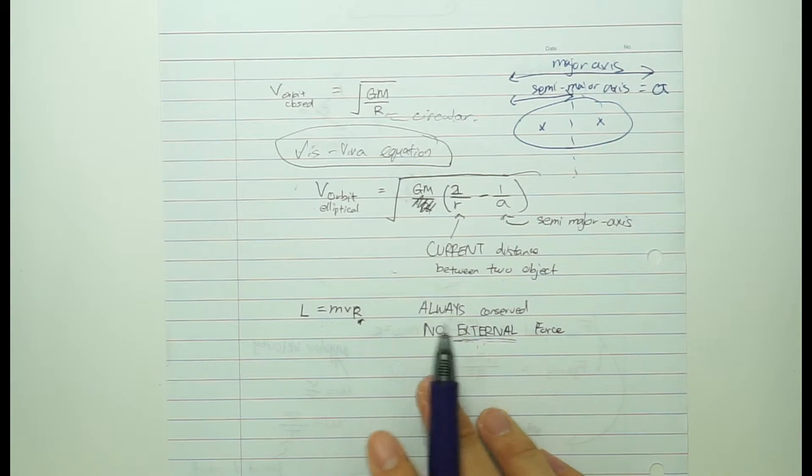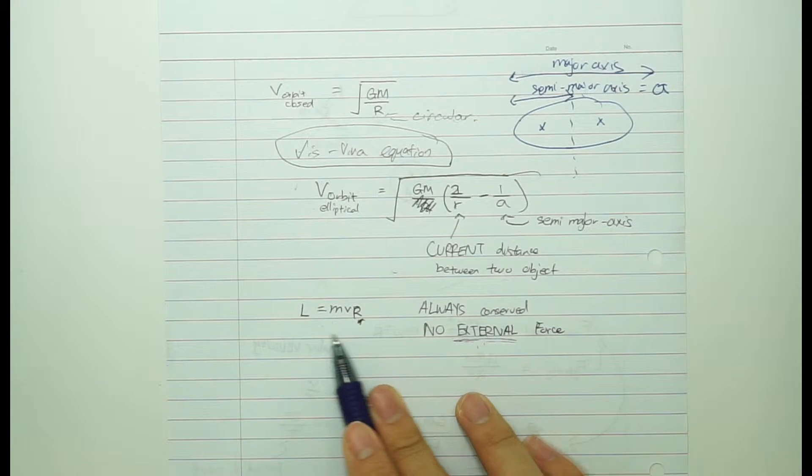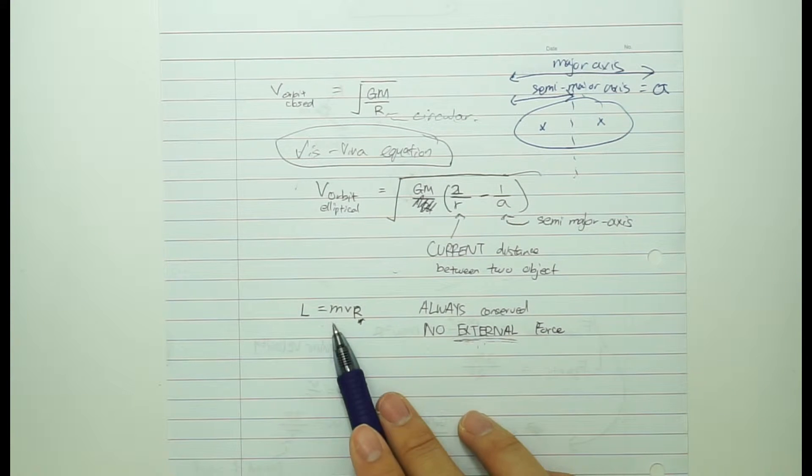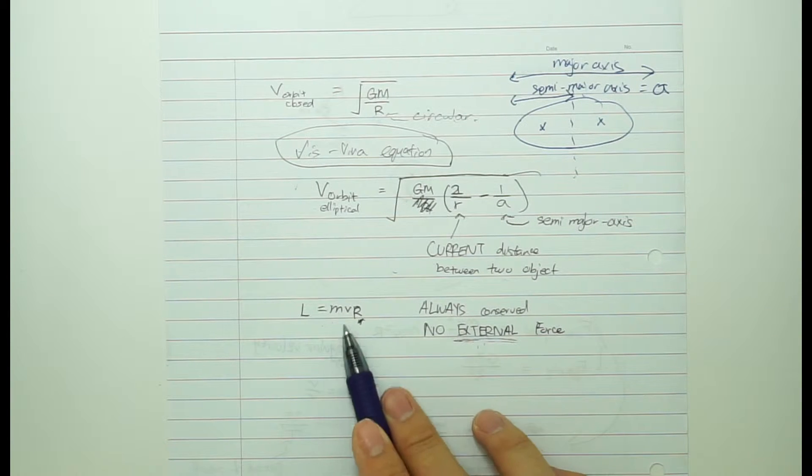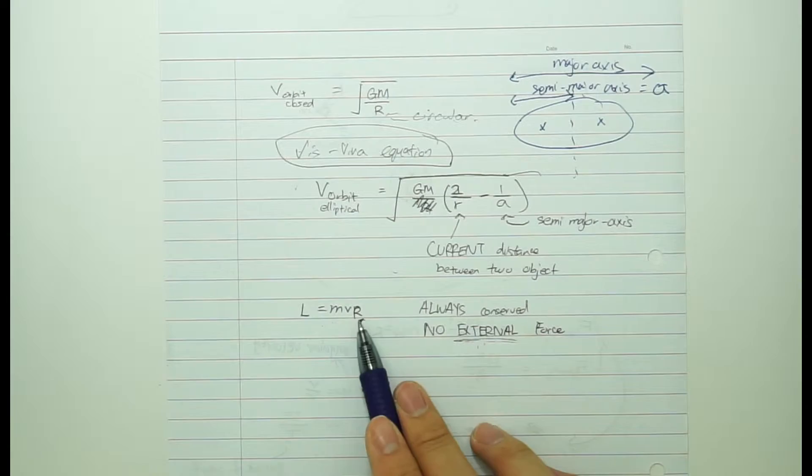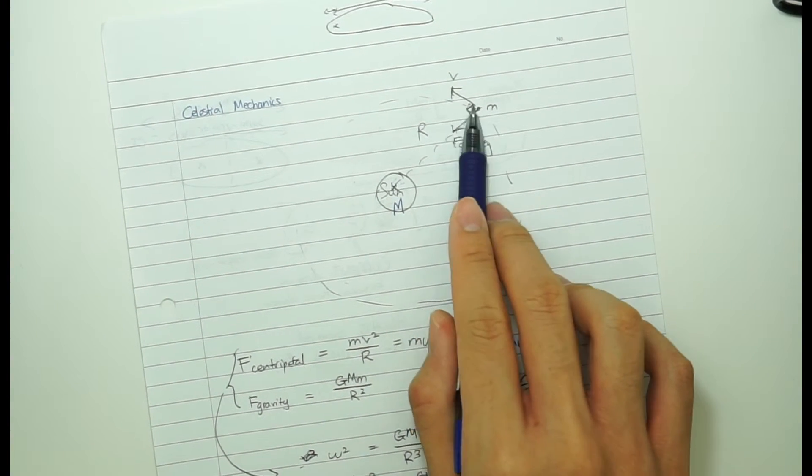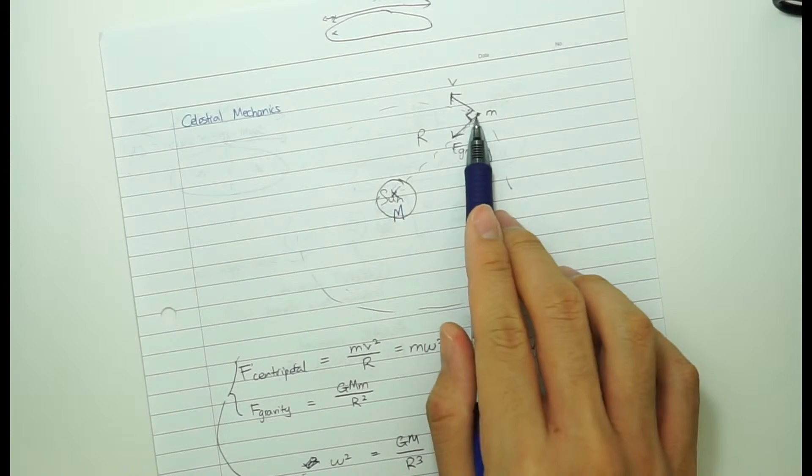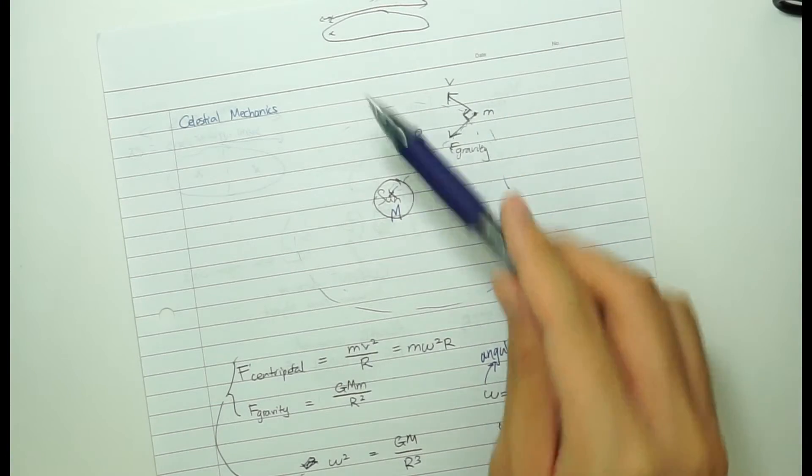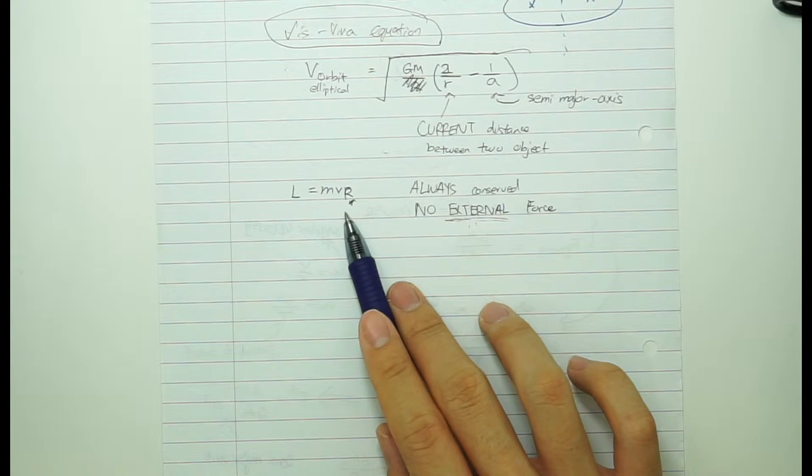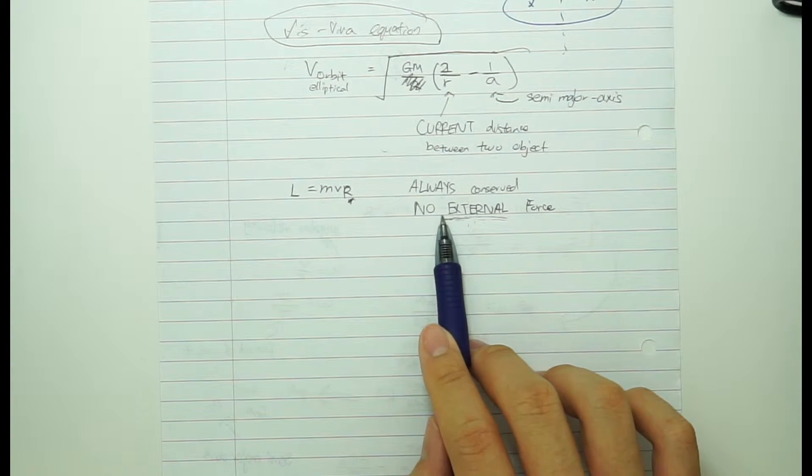And another important way of solving celestial mechanics problems is using angular momentum. Angular momentum represented by L is just like a measure of the amount of rotational movement it has. So in this case we can use the formula, mass of the orbiting object, v which is the velocity of the object, which we are referring to is the tangential velocity. We are saying it must be the tangential velocity of the object, so it must move in right angles as compared to the radius. And what happens is that this is always conserved when there is no external force, just like how energy is conserved.